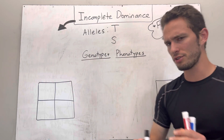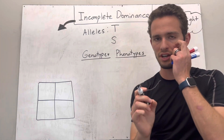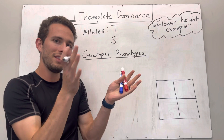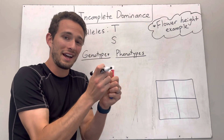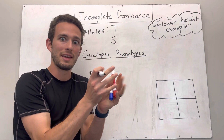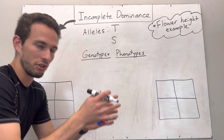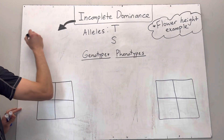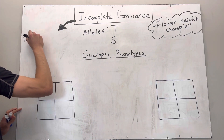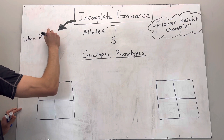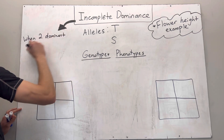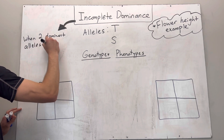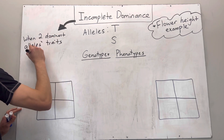So first, incomplete dominance — the definition is when you have two alleles that when combined together in a genotype, they mix. The allele traits mix. Co-dominance is when two dominant alleles' traits mix.